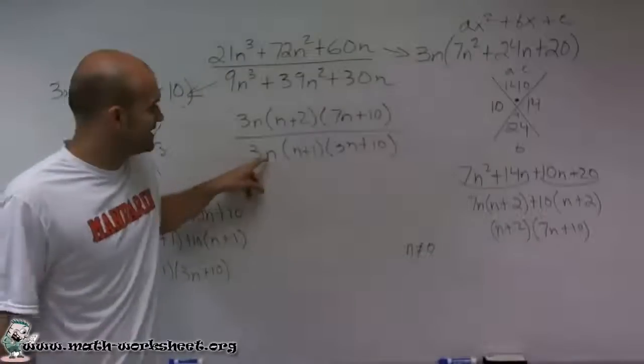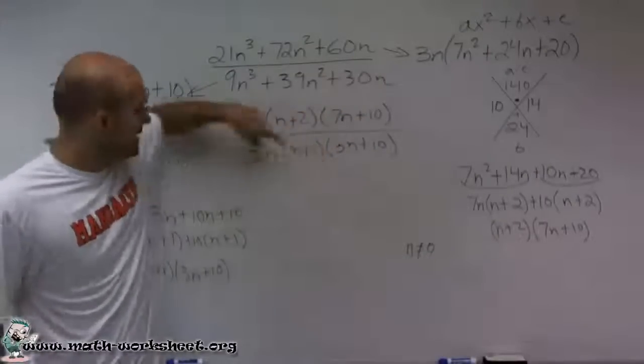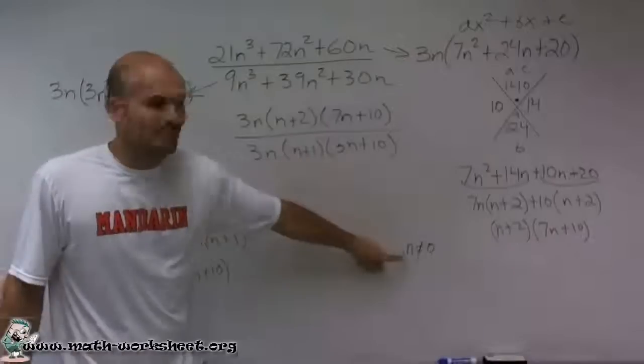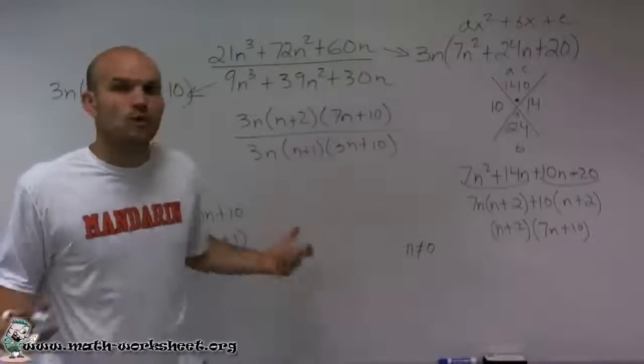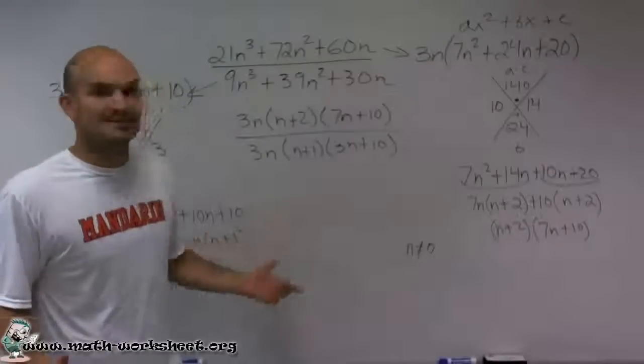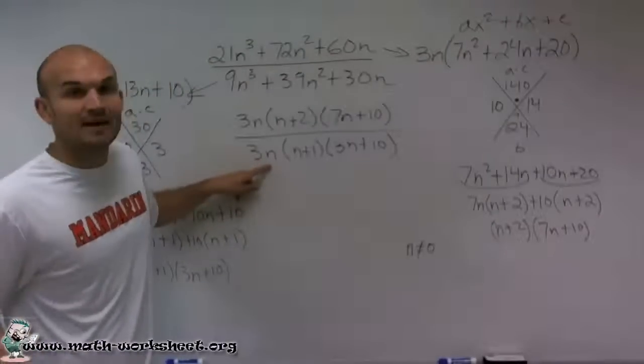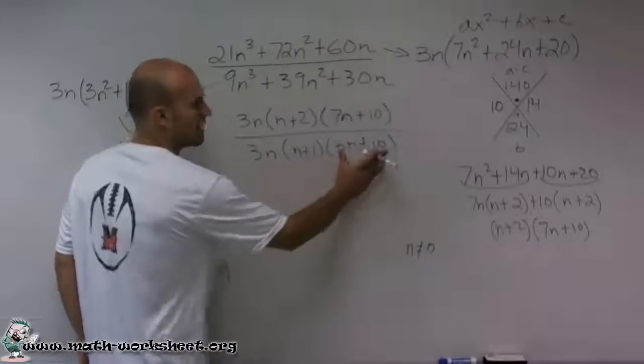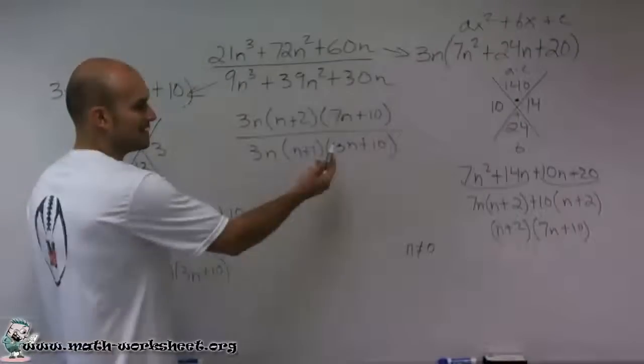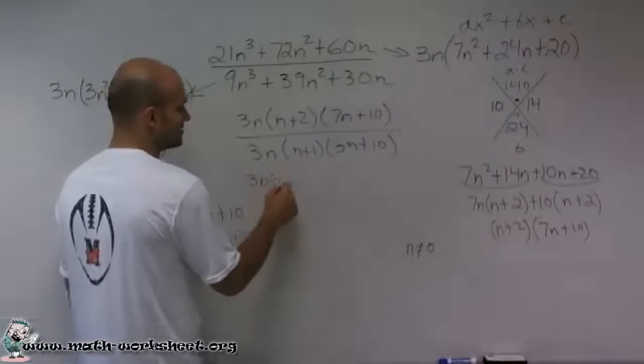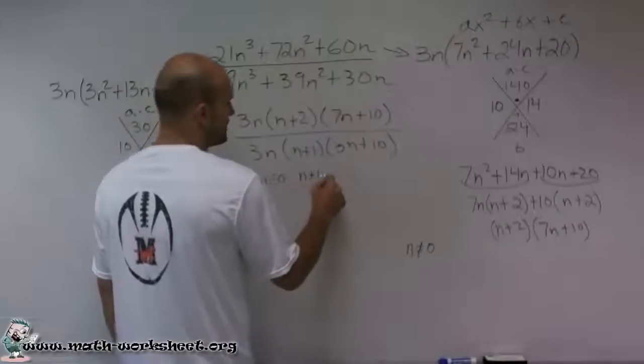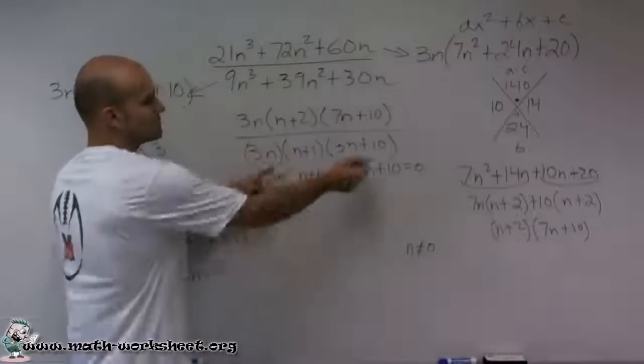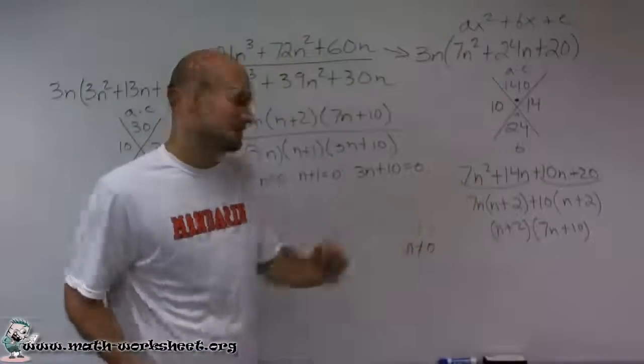So again, you notice that if these are all multiplied by each other, if n equals 0, that means all of this is going to equal 0. Therefore, n cannot equal 0. But what else, what other possible values for n could I get 0? Because if it's 0, obviously that works. But what about if n was negative 1? What about other values? What happens if this is 0, and what happens if this is 0? So that's why we write it by using the zero product property. We say 3n equals 0, n plus 1 equals 0, and 3n plus 10 equals 0. Because if each one of these terms was equal to 0, that means the whole denominator would be equal to 0.